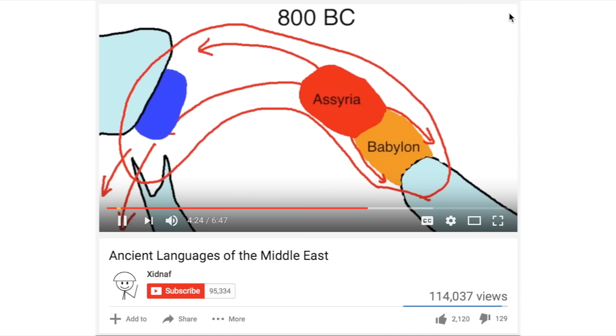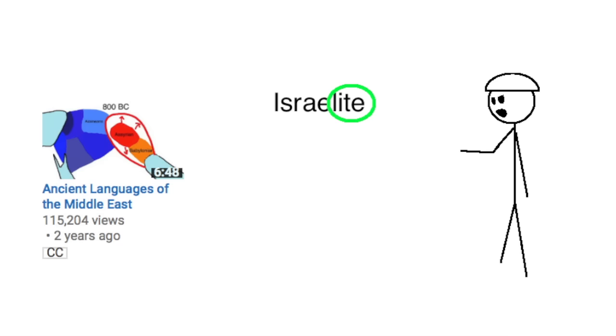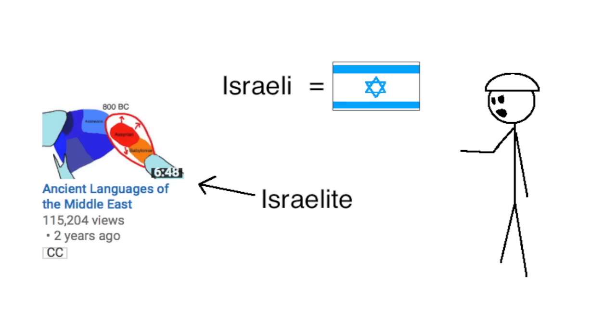Now we can really start the countdown to the most embarrassing mistake, starting with number twenty. Which was inhabited by another group of Northwest Semitic language speaking people called the Israelis. No, they were called Israelites. Israeli refers to the modern country of Israel, while Israelite refers to all of the ancient stuff.